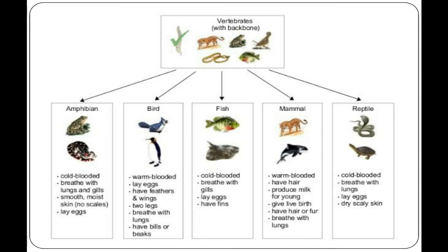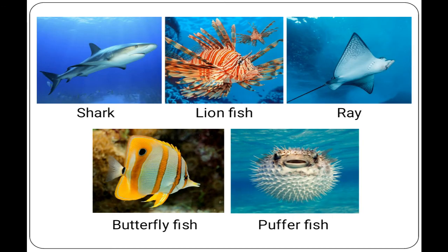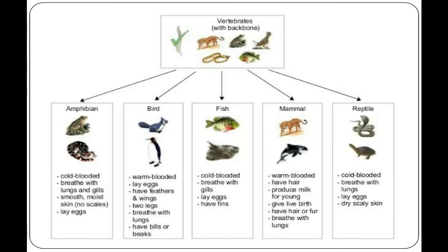Their bodies are streamlined so that they can move fast in the water. Their skin is covered with hard scales for protection. Most fish reproduce by laying eggs. Examples of fish include shark, lionfish, ray, butterfly fish, puffer fish, etc.